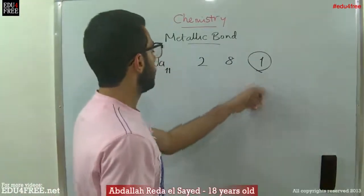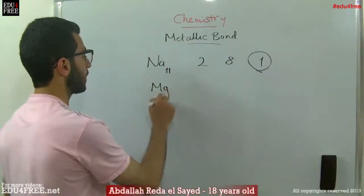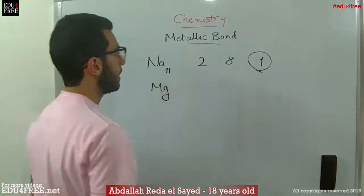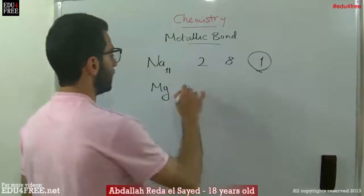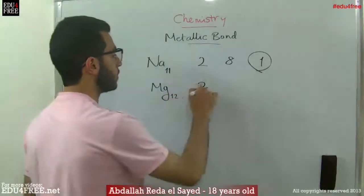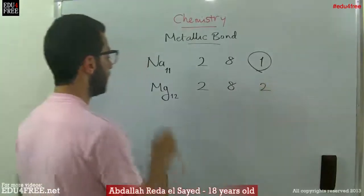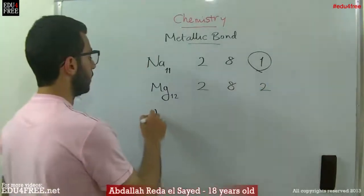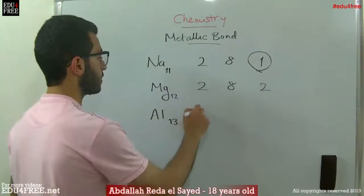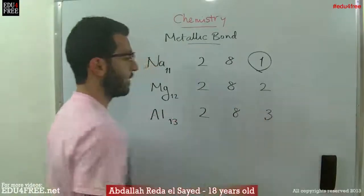Another example is magnesium. Magnesium has atomic number 12, so its configuration is 2, 8, 2. Aluminum is 13, so it's 2, 8, 3.